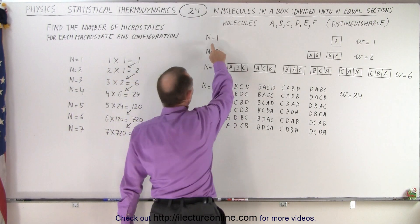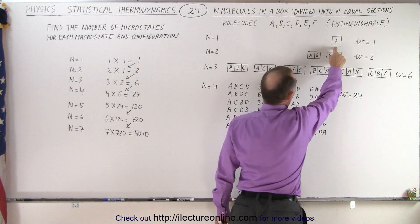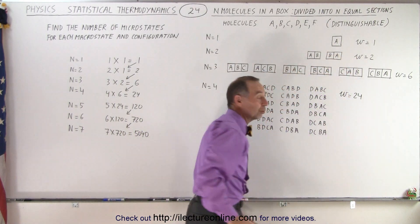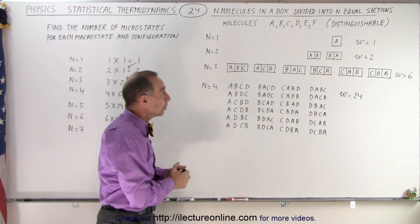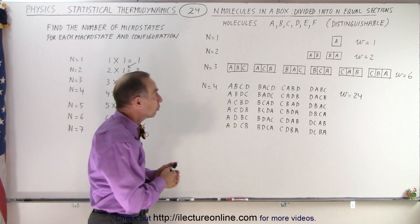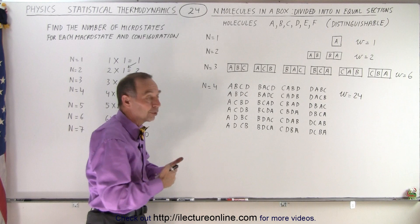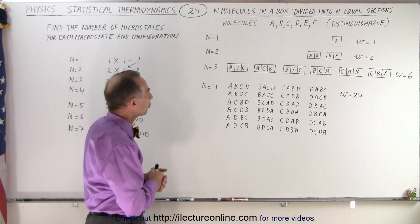Well, in the case where n equals 1, we have one molecule and one partition. We only have one possible way in which this can happen. And so w equals 1, the number of microstates equals 1, or that's also called the thermodynamic probability, equals 1.